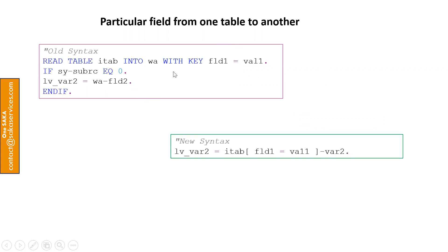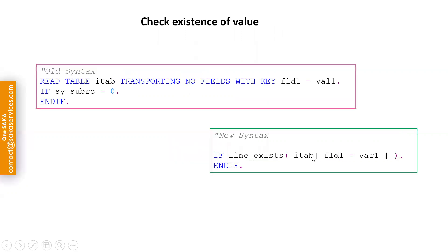If you want to get a particular field from one table to another, in the old way we read the internal table into a work area, check if the system variable SY-SUBRC equals zero, and then proceed. In the new syntax, this can be written as: internal table with field one and value one — this part gives you the work area, and then you assign which specific field value you want.